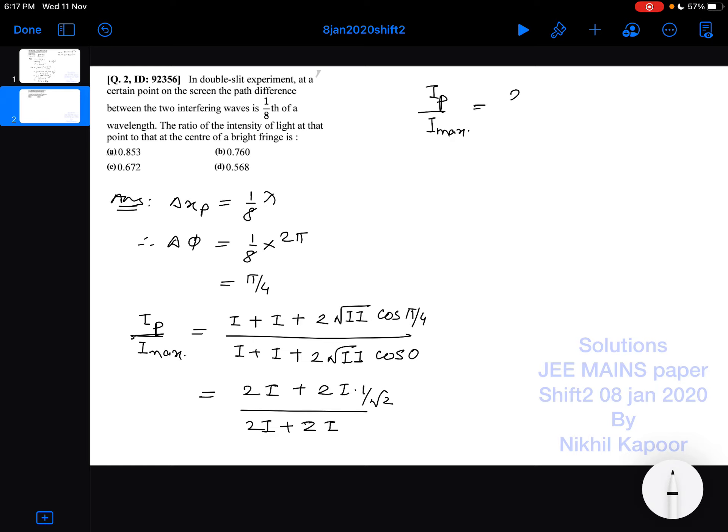would be 2i plus root 2i divided by 4i, where i is intensity of each wave. So it will be 2i plus 1.414i upon 4i. So it will be 3.414i divided by 4i. This gets cancelled.